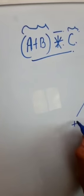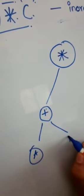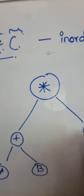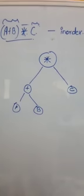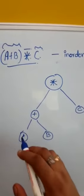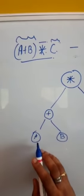To build the tree, we start with star as the root node. On the left side we place the expression 'a plus b', where the operator plus is chosen first, then a and b as its children. On the right side, c is placed as a single node. Now we have the tree structure ready to derive post-order and pre-order traversals.